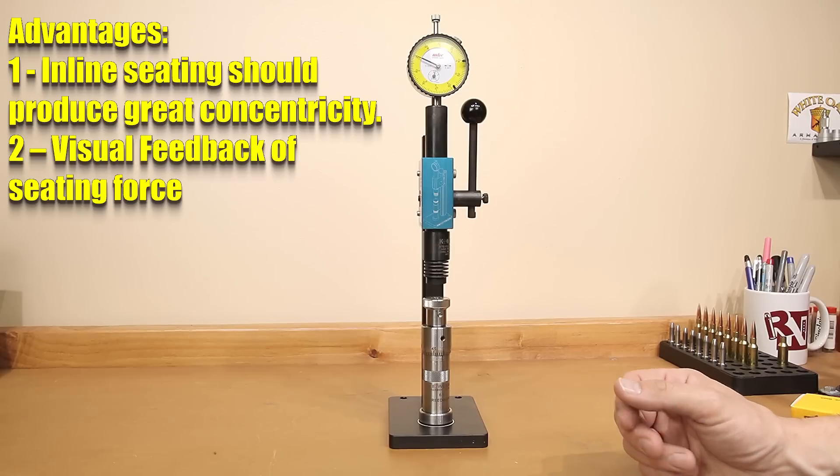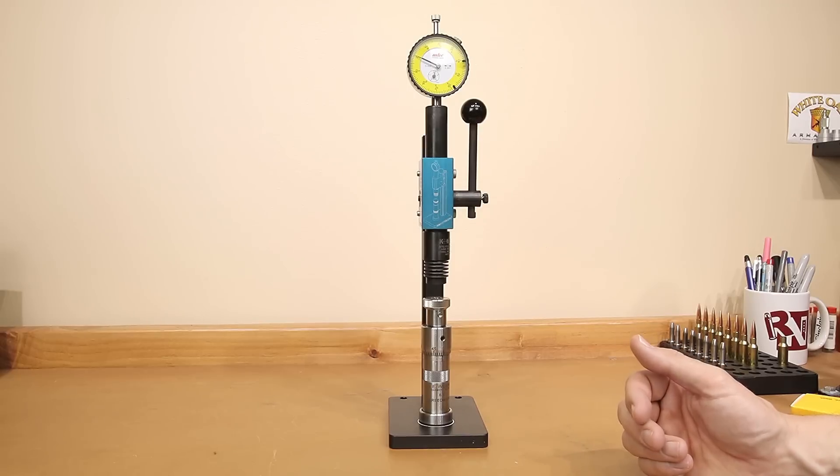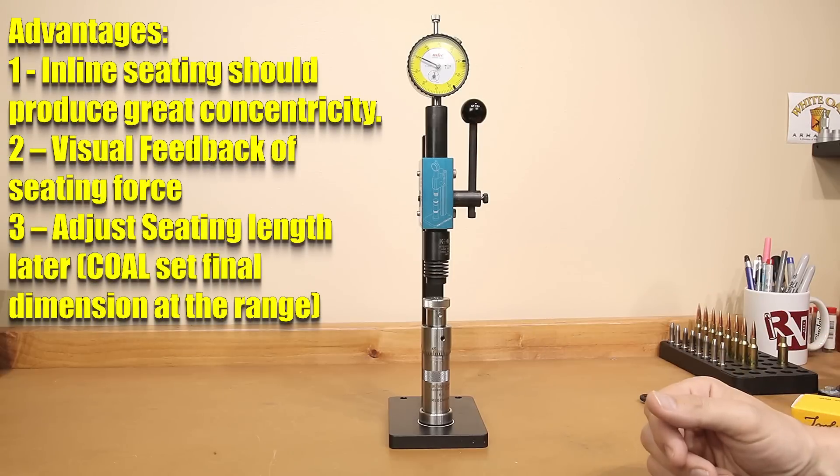A setup like this allows a reloader to see the variation in their process as well as see when one particular round might be an outlier from the rest of the group. This allows a reloader to segregate that round before it shows up in the wrong spot on your group. The third is the ability to adjust the seating depth at the range.